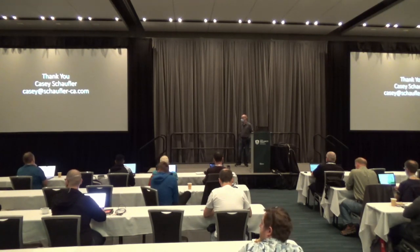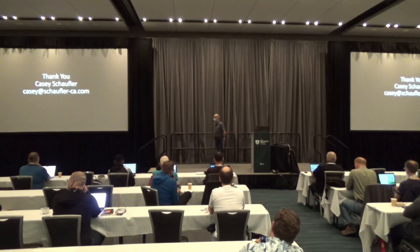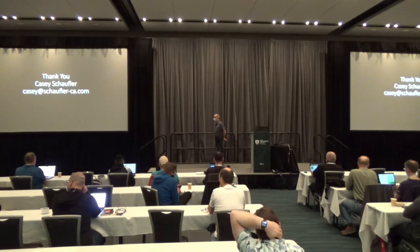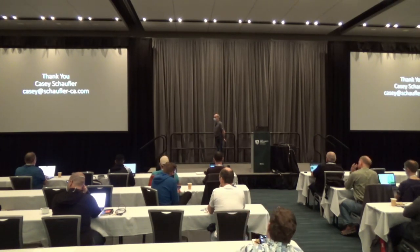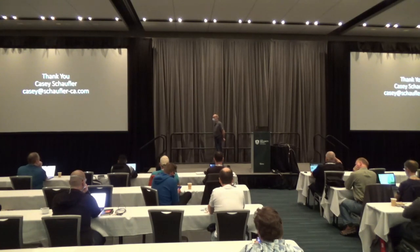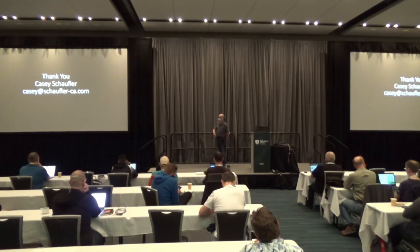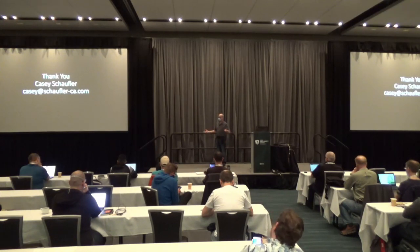Another question: why must it be a system call? Couldn't ioctl work instead? Casey responds: ioctl would have been an option for files, but the problem is you'd have to use prctl to get the information for a process, and then ioctl or fcntl for files — it's not nearly so clean. System calls provide a unified approach.